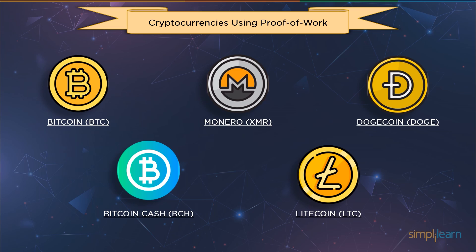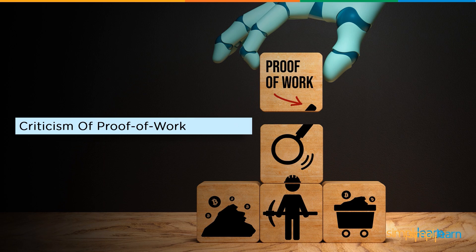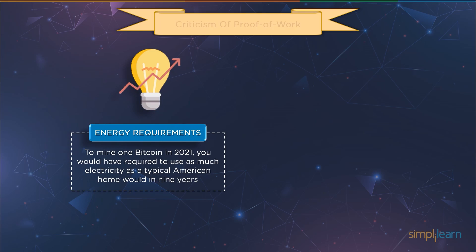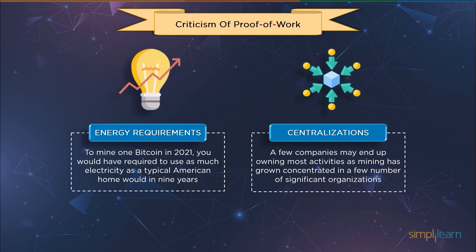Proof-of-work has also faced some challenges and criticism. Regarding energy consumption, The New York Times claims that in 2009 one Bitcoin could be mined with a standard desktop computer and very little electricity, but to mine one Bitcoin today one would need as much electricity as a typical American home uses in nine years. Regarding centralization, decentralization is one of the key benefits that attract crypto investors; however, because of the high computational and energy requirements of proof-of-work, mining operations have been concentrated in a select few large companies, which might lead to a few companies controlling most of the cryptocurrency business.